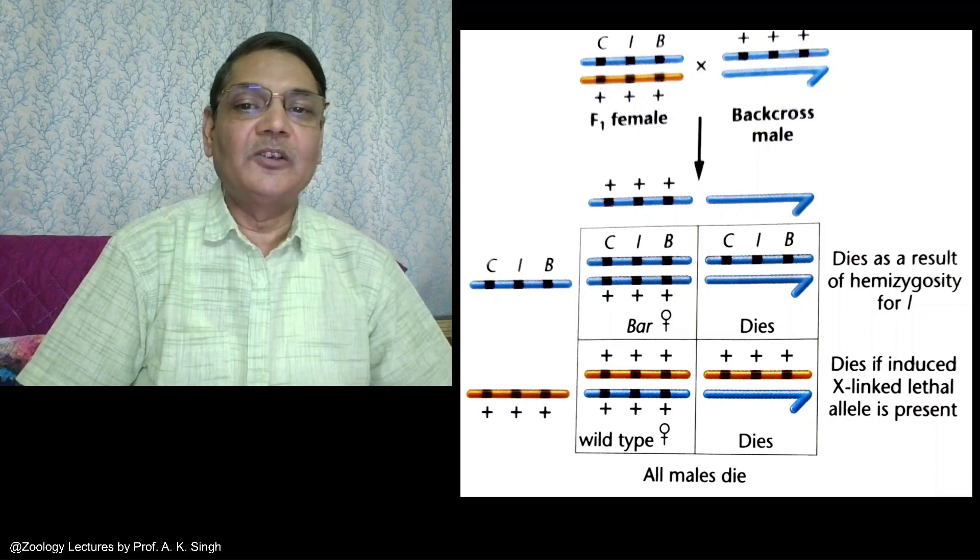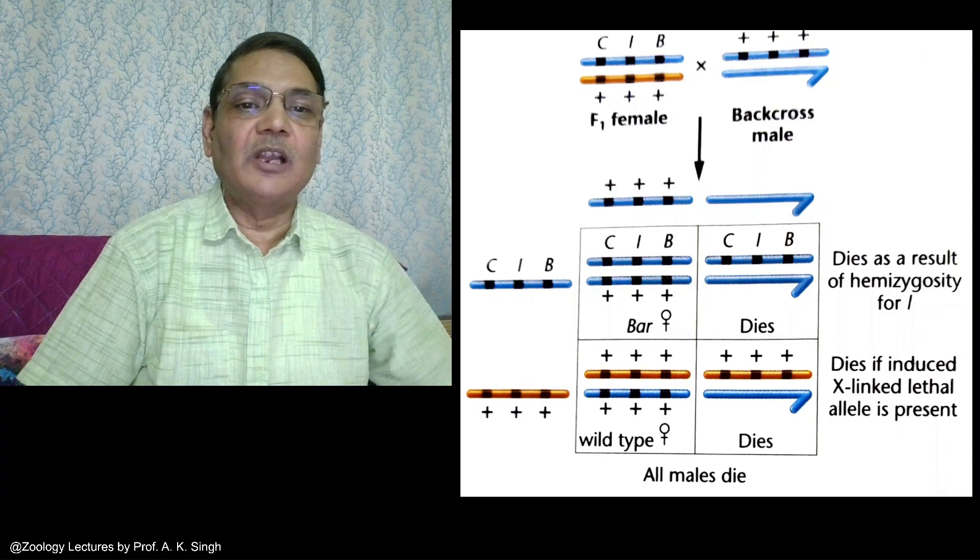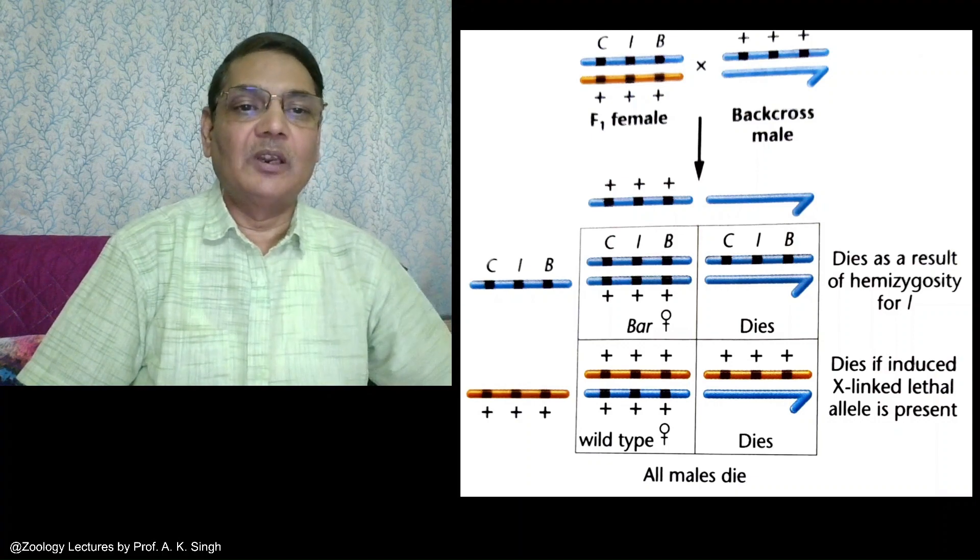This is one of the methods in which you can observe the consequence in the F2 generation.